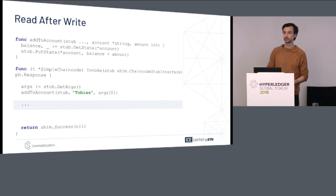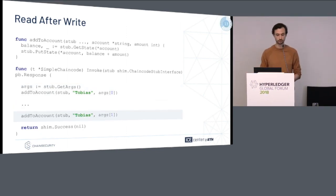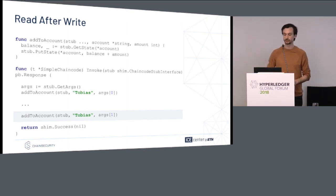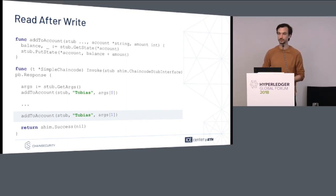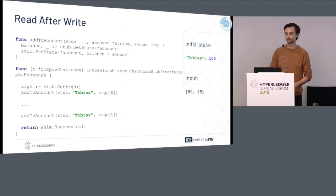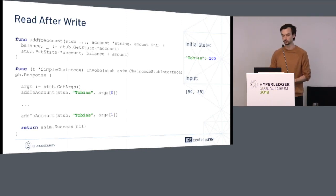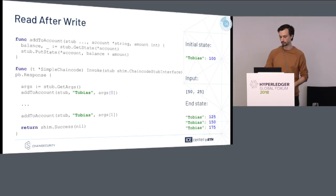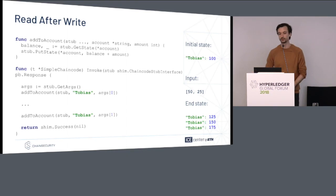After this there might be some other computation, and in the end we want to add the second argument as well. So in the end it's going to be two amounts being added to my account. Let's say in the beginning I have 100 Swiss francs in my account, and with the transaction there are going to be 50 and 25 Swiss francs added to my account.